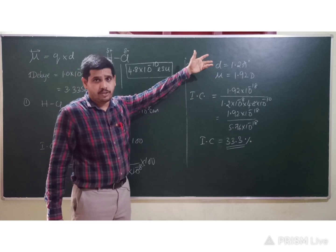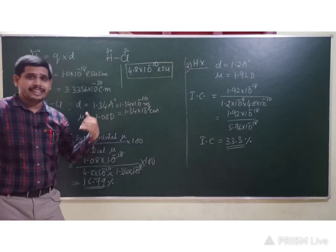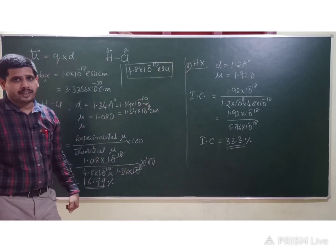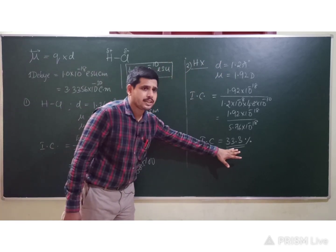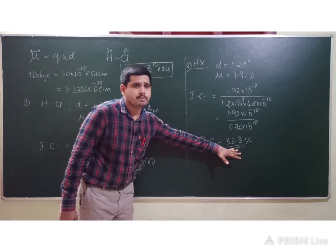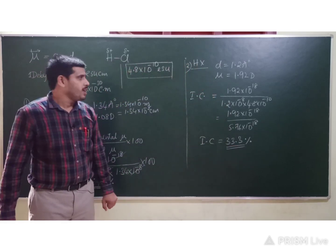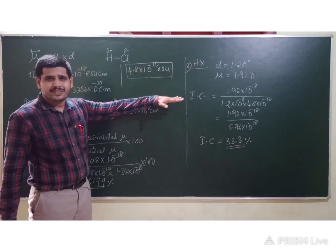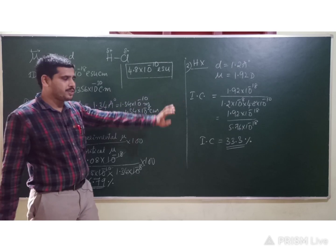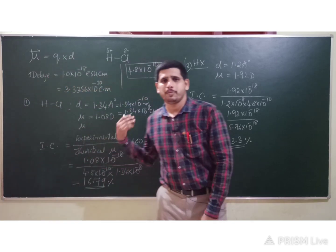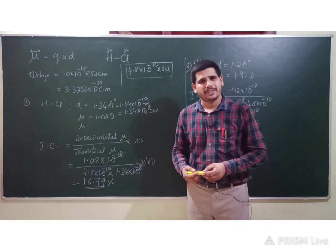The 33.3% ionic character is quite large, suggesting this bond is more likely ionic. If X is iodine, then HX is HI, which is a strong acid — consistent with significant ionic character. So ionic character can be computed using dipole moment values. Please work out such types of problems. Thank you for watching.